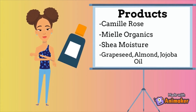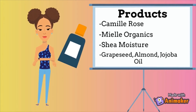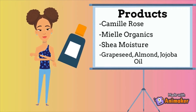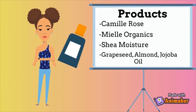Myel Organics is another great line — their products are generally lightweight and have really good ingredients. As for oils, you want to stay away from olive oil and coconut oil. Oils like grapeseed, almond, and jojoba oil are perfect for low porosity hair.